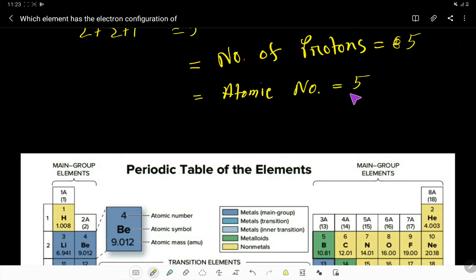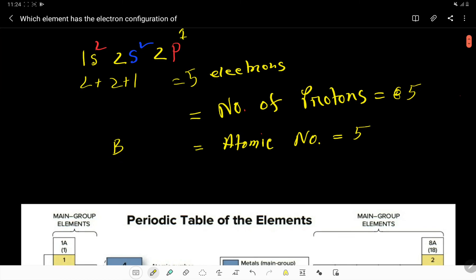So here, look here—boron is an element of group 13 or 3A, and its atomic number is five. So undoubtedly we can say that this is the element of boron. Its atomic number is five and its electronic configuration is this.